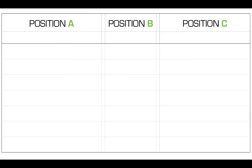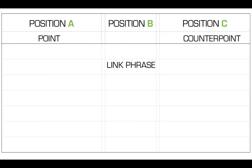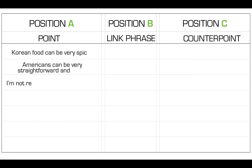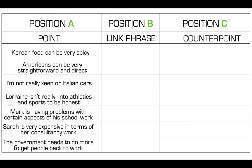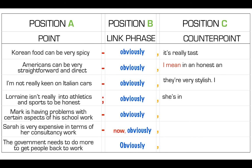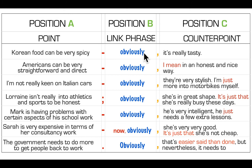We'll use the position A, B and C format, and we'll put here — I won't call it a sub clause and a main clause, I'll call it a point and a counterpoint — and we'll put our link phrase in the middle. I'll make some new points and then put in a but link. The but link I'm going to use is 'obviously.'